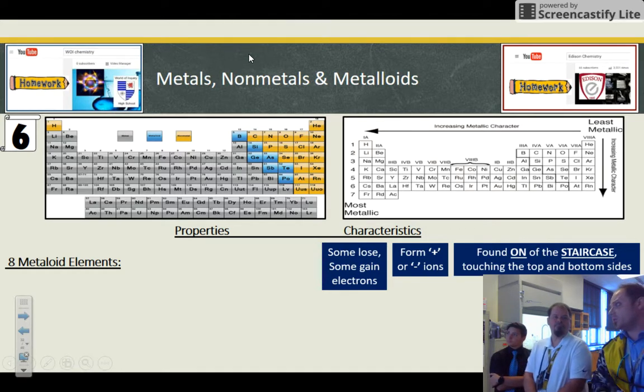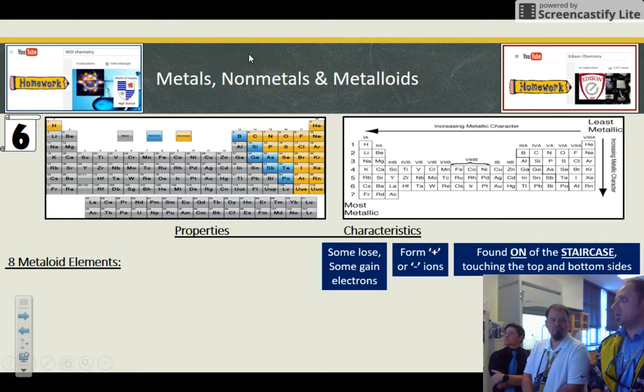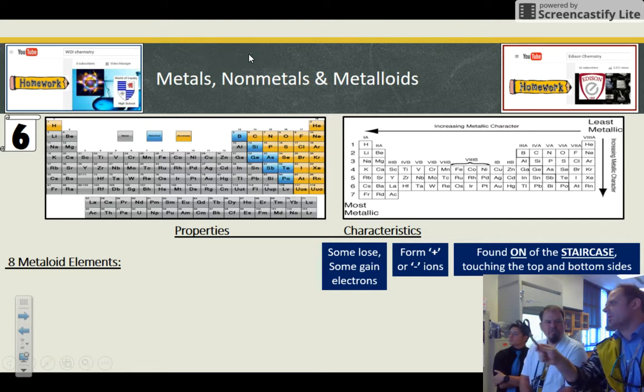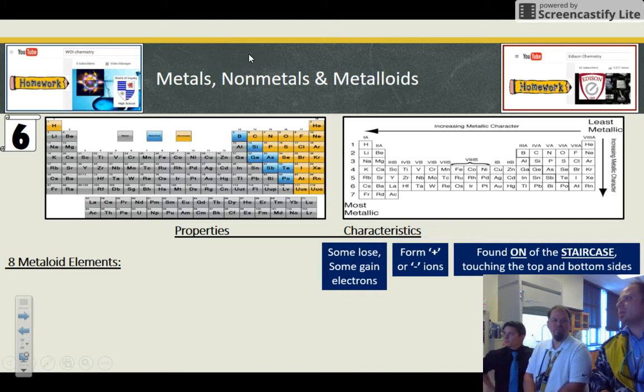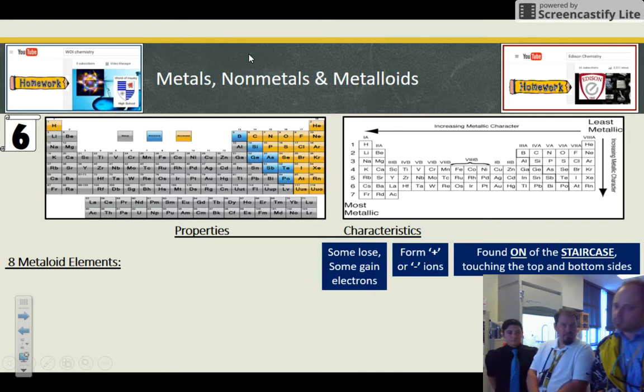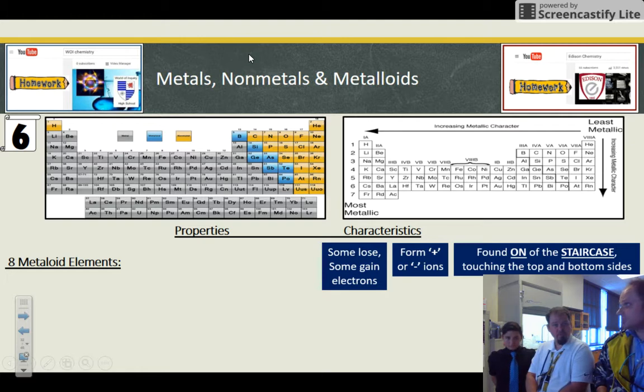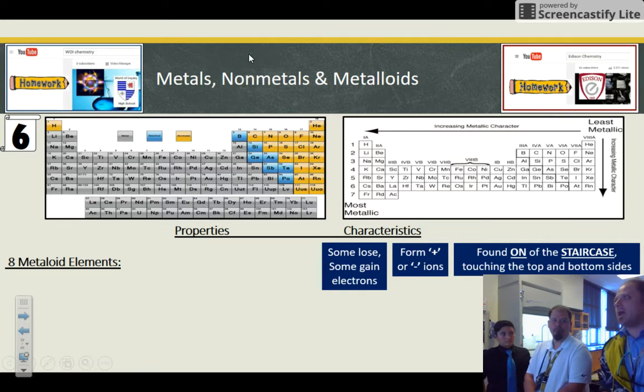These are found on the staircase, touching the top and bottom and sides. Astatine, polonium, tellurium, arsenic, germanium, silicon, and boron. Not tin, it's antimony. SN is tin which is tough. And the only one that is the exception to that rule is a metal you've all know is aluminum. If you have an aluminum can in your hand, that's metal. And while it touches the staircase, it just has too many metallic properties to be called a metalloid.